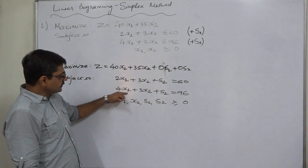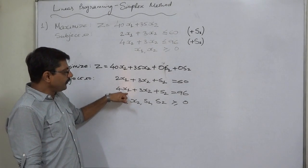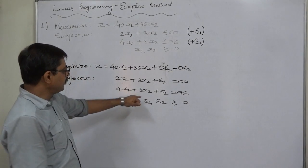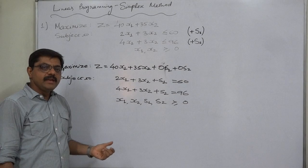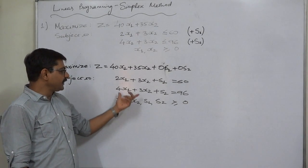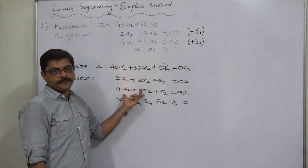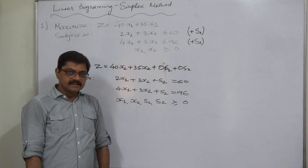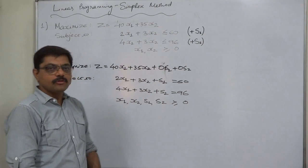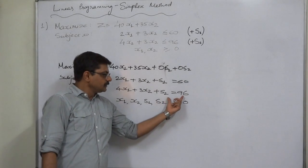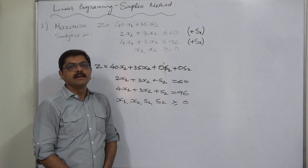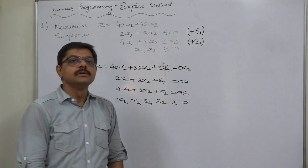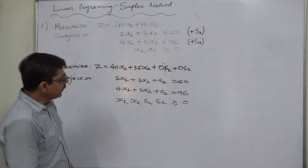Similarly, if this second constraint relates to labor hours and we have 96 hours available — with 4 hours required to manufacture 1 unit of x1 and 3 hours for 1 unit of x2 — and we manufacture 0 units of both, then s2 equals 96, meaning the entire capacity is unused. So the slack variable represents the unused capacity or unused resources.